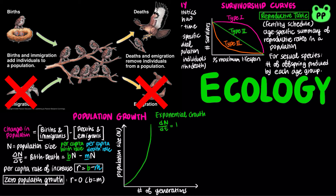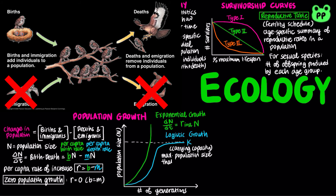Exponential growth cannot be sustained for long in any population. A more realistic population model limits growth by incorporating carrying capacity, denoted by K, which is the maximum population size the environment can support. In the logistic population growth model, the rate of increase declines as carrying capacity is reached, represented by the equation dN/dt equals the instantaneous per capita rate of increase times N times (K minus N) over K, which produces a sigmoidal curve.